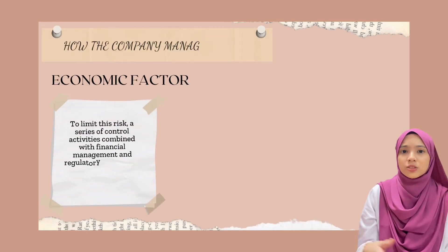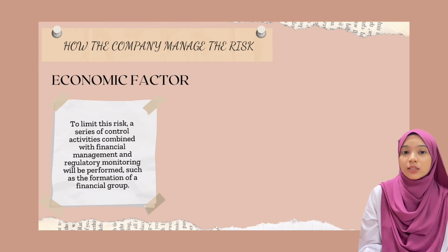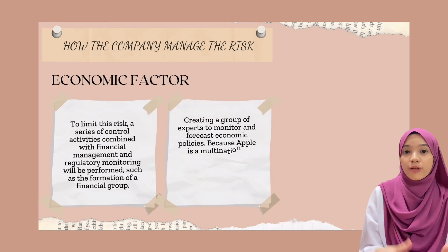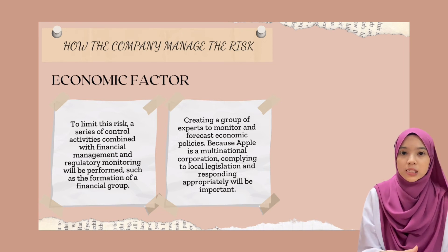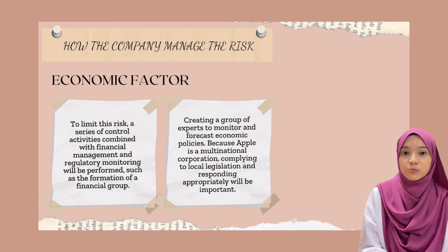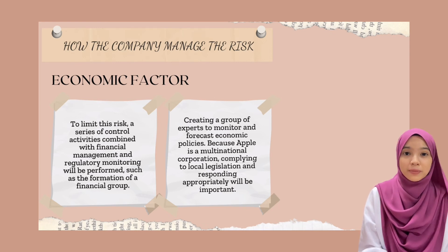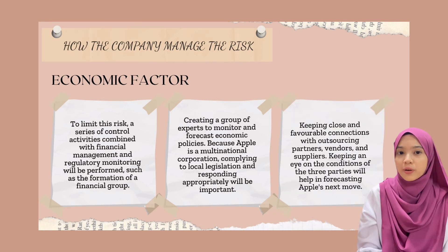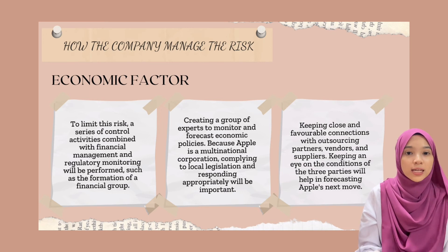For economic factors, to limit this risk, control activities combined with financial management and regulatory monitoring will be performed, such as the formation of a financial group. The financial group will use an asset portfolio to ensure that risk is sustained within a predetermined extent. A group of experts will monitor and forecast economic policies, which is important since Apple's subsidiaries operate in many countries with different economic policies from the US. Complying with local legislation and responding appropriately will be important. The experts will analyze and make predictions about economic policy beforehand and provide suggestions to the financial group. Keeping close and favorable connections with outsourcing partners, vendors and suppliers is also essential, as relevant stakeholders will be affected simultaneously and monitoring their conditions will help forecast Apple's next moves.